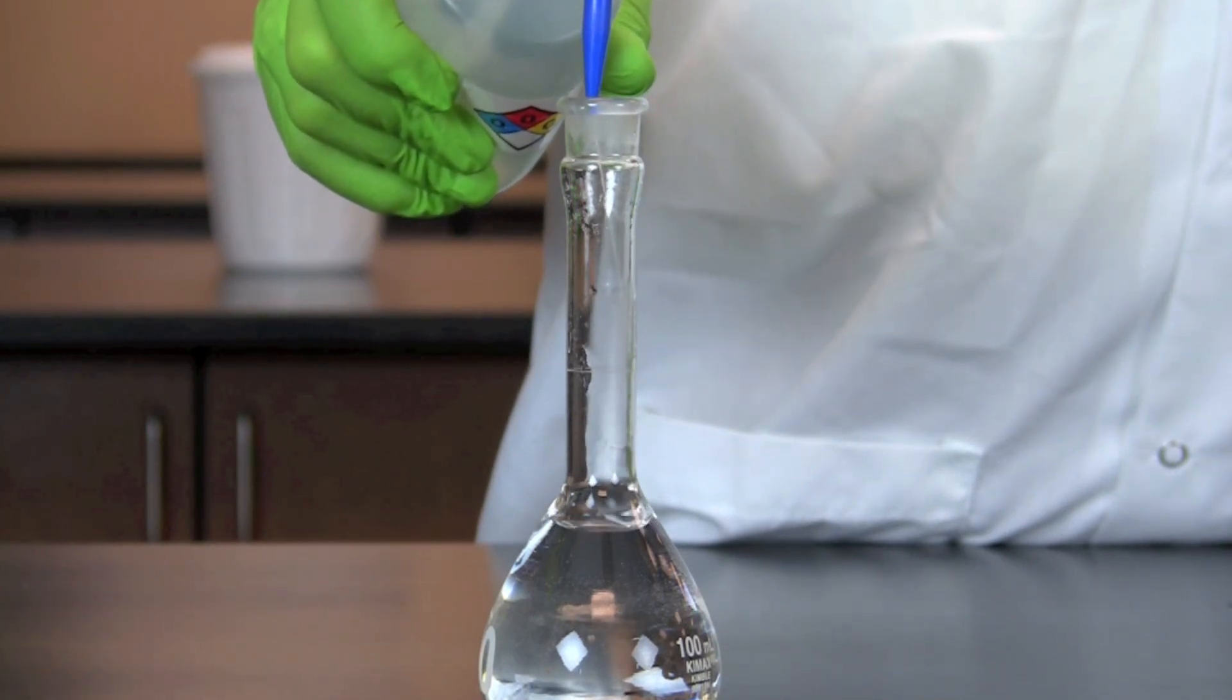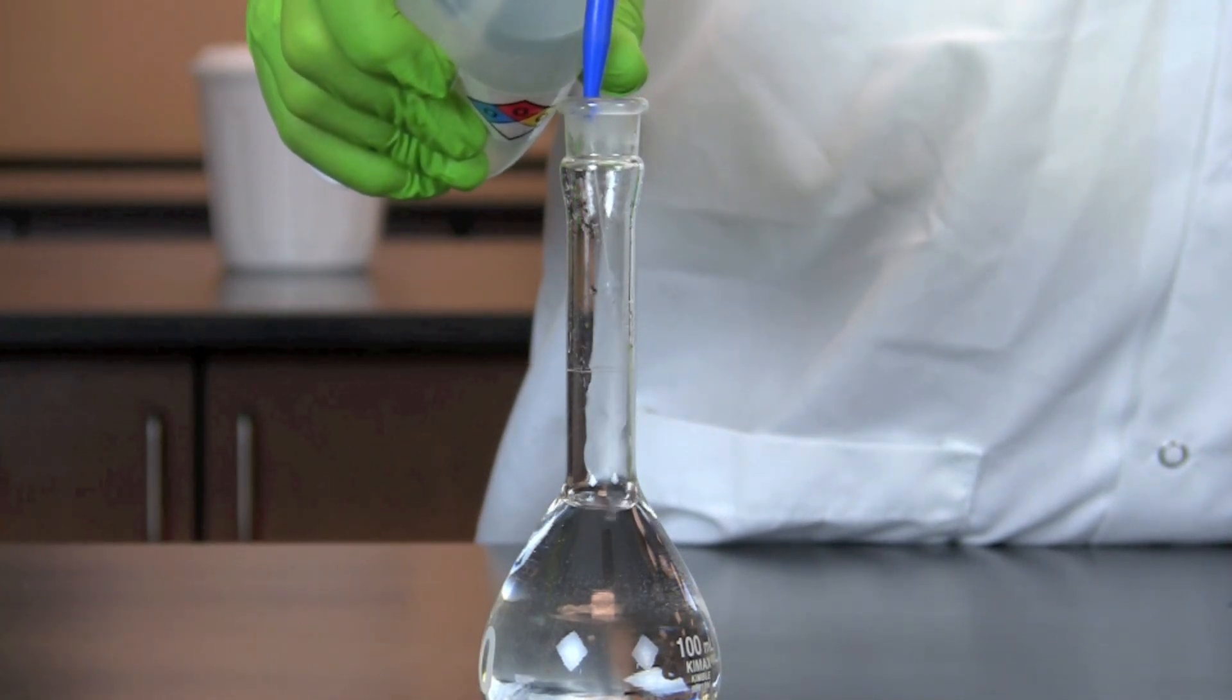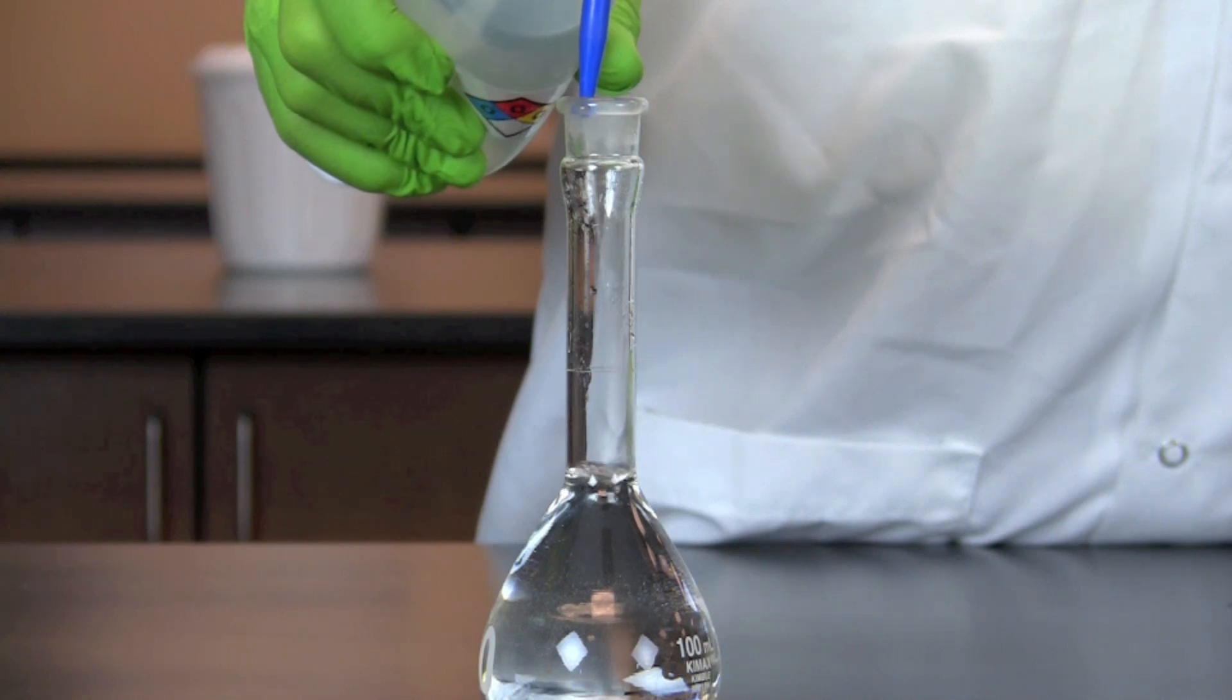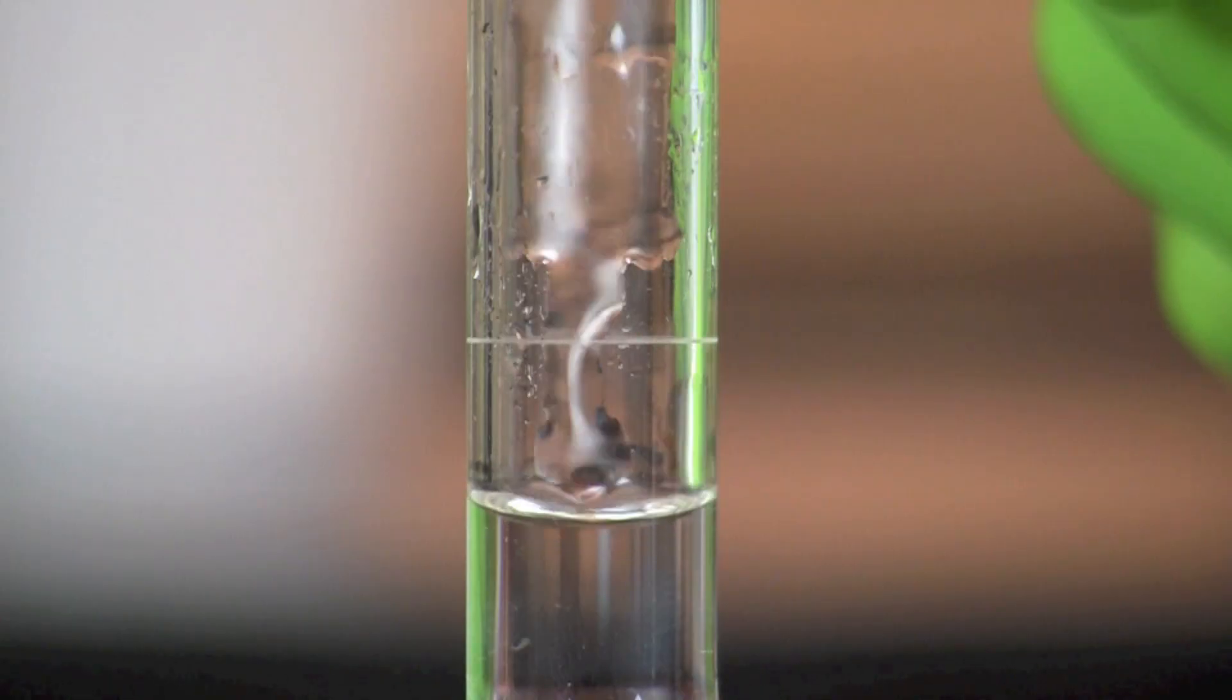Once all of the sodium chloride crystals are dissolved, carefully add distilled water to the flask until the meniscus touches the etched mark on the neck.